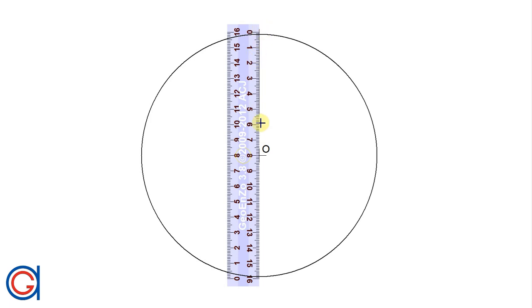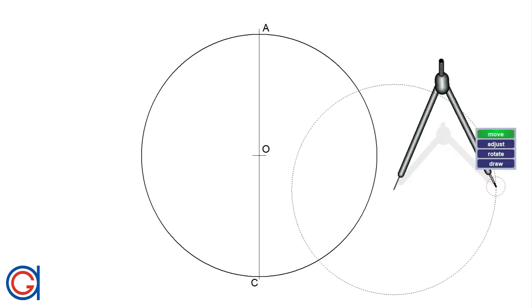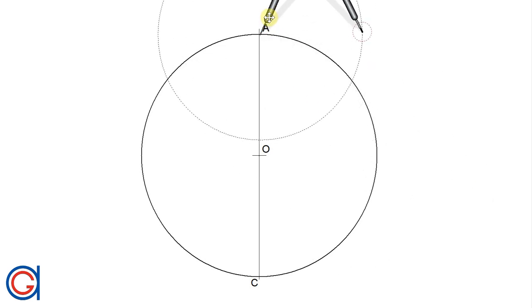The first thing we're going to do is draw a vertical diameter. The next step with our compass, where it cuts the circle we'll call A and C as can be seen here. Now with a compass setting our compass in point A